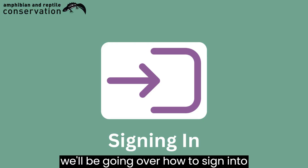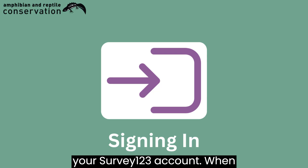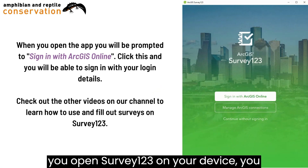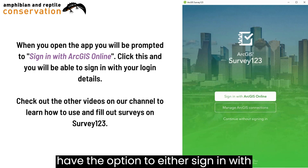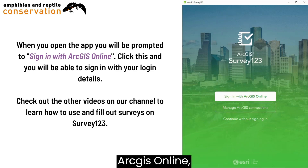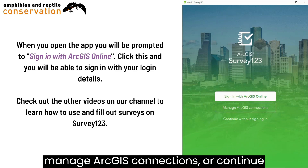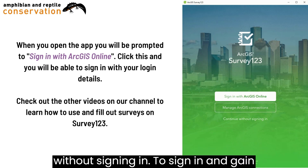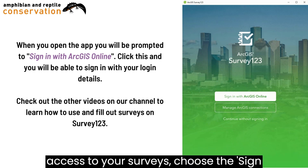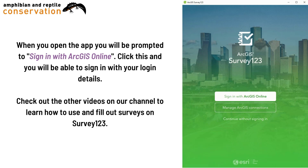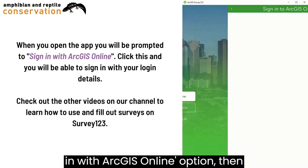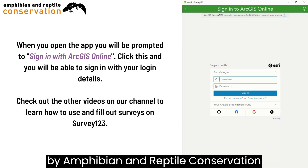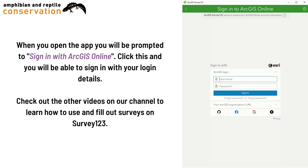Finally, we will be going over how to sign in to your Survey123 account. When you open Survey123 on your device, you'll have the option to either sign in with ArcGIS Online, manage ArcGIS connections, or continue without signing in. To sign in and gain access to your surveys, choose the Sign in with ArcGIS Online option, then input your login credentials provided by Amphibian and Reptile Conservation and click Sign In.